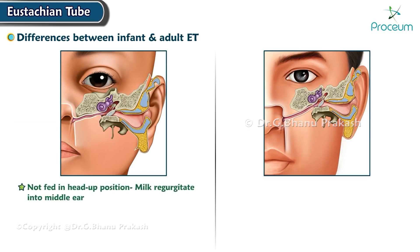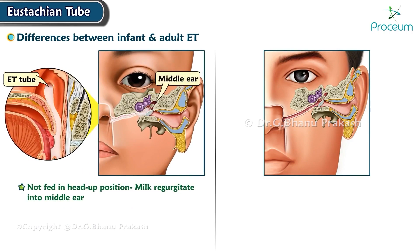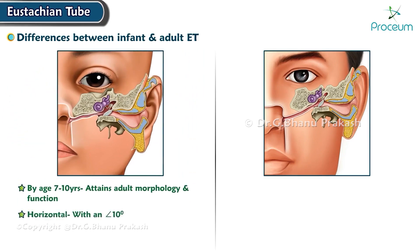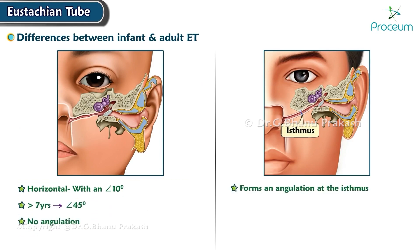When infants are not fed in a head-up position, milk can regurgitate into the middle ear. By the age of 7 to 10 years, the tube attains adult morphology and function. The tube is more horizontal with an angle of 10 degrees in infants; beyond age 7, it forms an angle of 45 degrees with the horizontal. In adults, there is an angulation at the isthmus, whereas in infants there is no angulation.